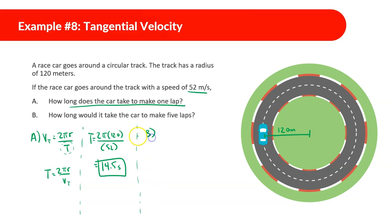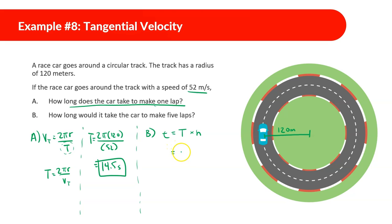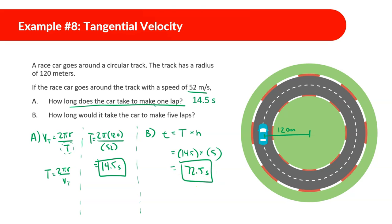Part B: how long would it take the car to make five laps? The total time equals the period times the number of cycles. So: 14.5 seconds × 5 = 72.5 seconds.